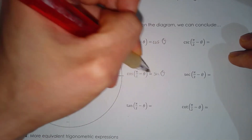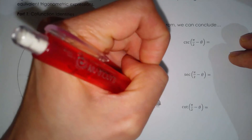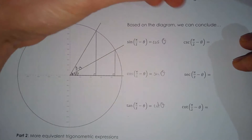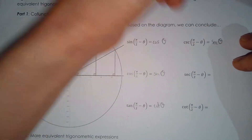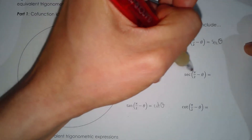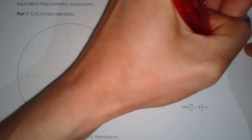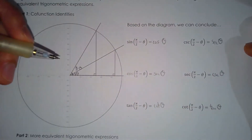Going from cosine, we switch to sine. For tan, the complementary trig function is cotan theta. Cosecant, when working with the complementary angle, can be changed to secant theta. Secant of pi over two minus theta becomes cosecant theta. And cotan of pi over two minus theta becomes the complementary trig function of tan, which is tan theta, using the complementary angle theta.